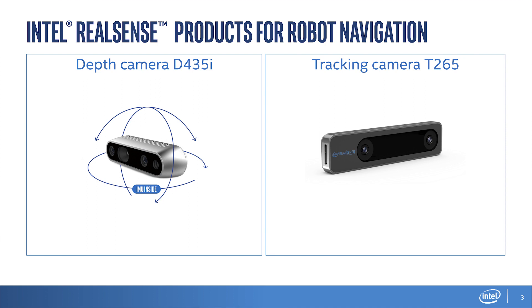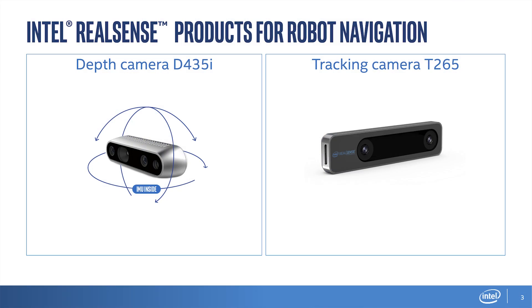These are the two cameras I'm going to talk about. On the left is the D435i. Many of you might already be familiar with our D400 series — these are all active stereo cameras with an ASIC that does stereo matching. In the 435i, we added an IMU with accelerometer and gyroscope, which is very useful for mobile robot applications. On the other hand, there's the T265 tracking camera, which we just launched at the beginning of this year. It does visual inertial odometry or SLAM onboard, determining its position and orientation in space.